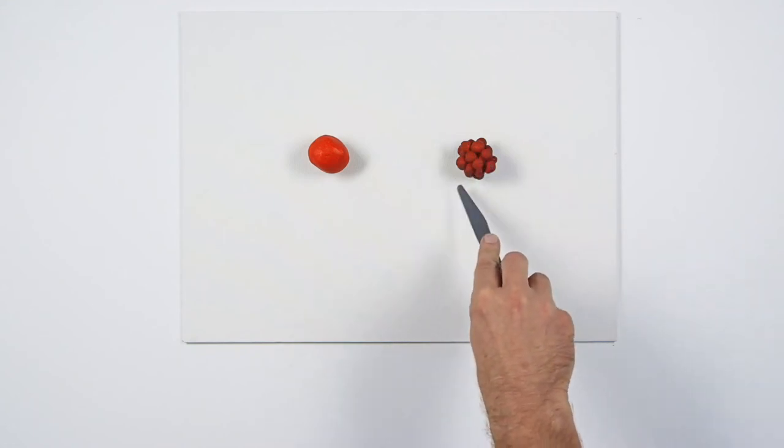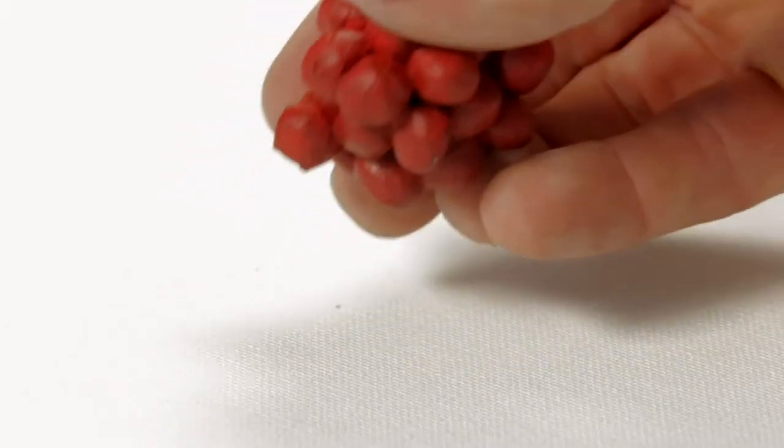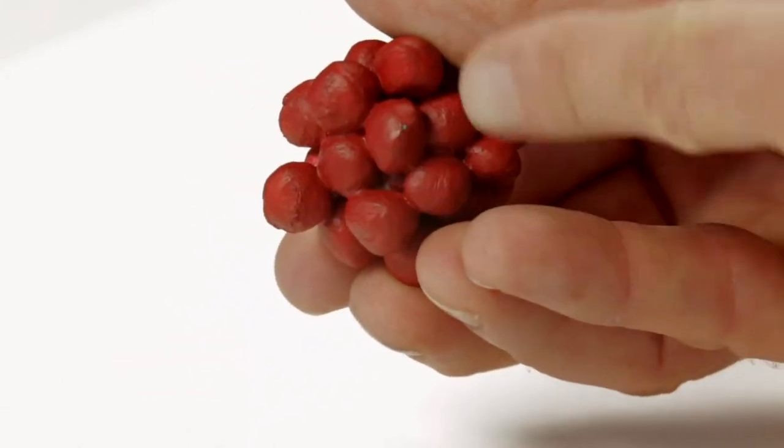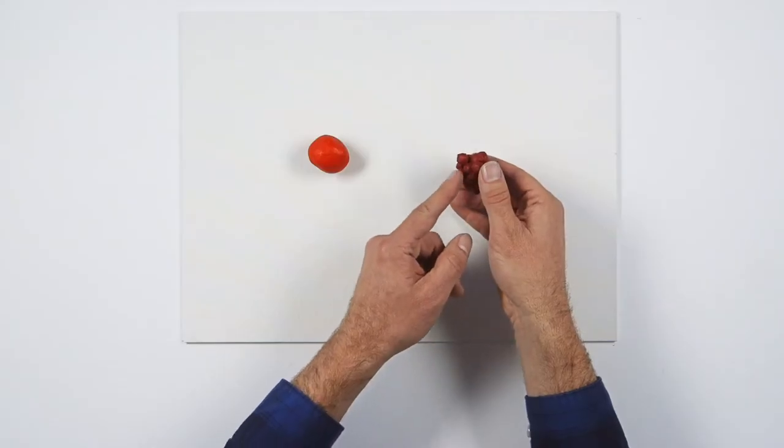Although the cluster of small particles appear to be the same volume, they have a greater combined surface area to be coated. So this pigment would require more binder to create a paint.